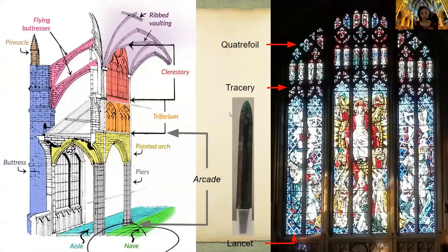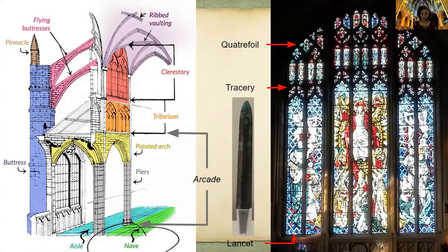So we've got the clerestory, which is where all of the stained glass is at. At the very top of the window we've got the quatrefoil, which is the four interlocking circles. We have the tracery, which is right below the quatrefoil and usually depicts angels or some kind of intricate art design. And then we've got the lancet windows, which are the blade-shaped windows.